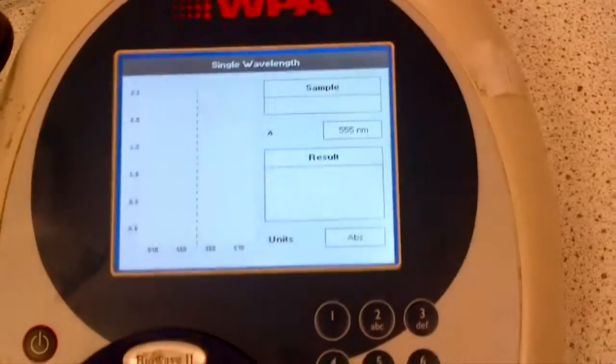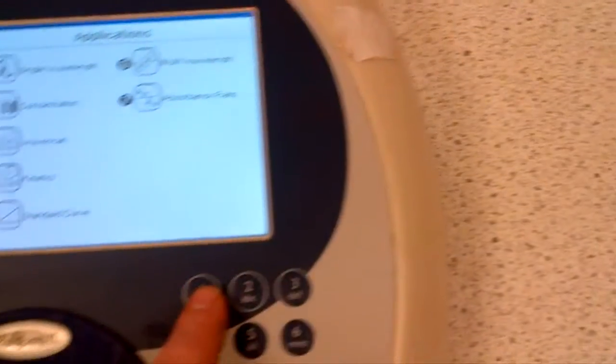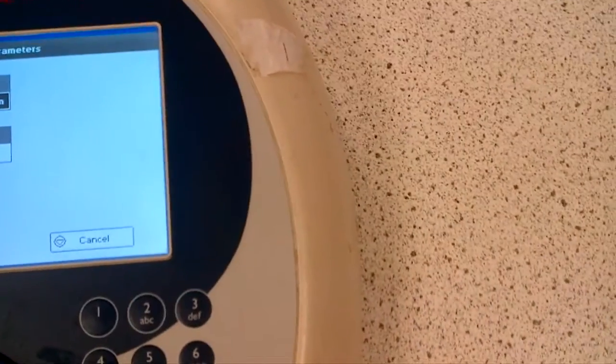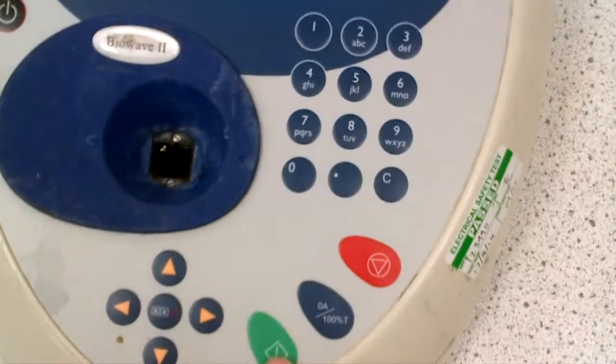So we're happy with 450, so press 1, clear out, and go back to 450. And again, it's the green button.